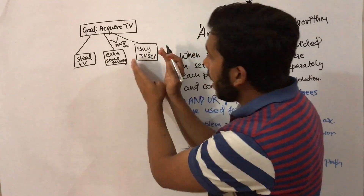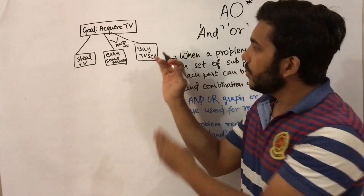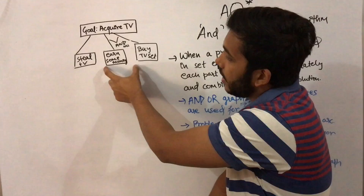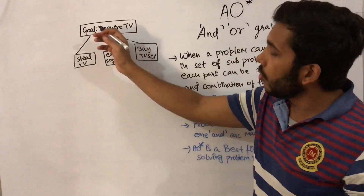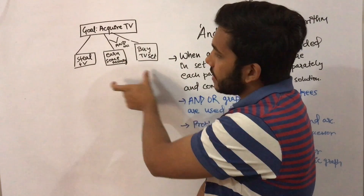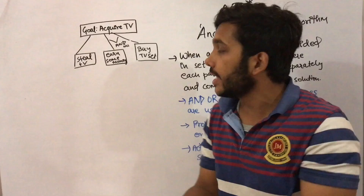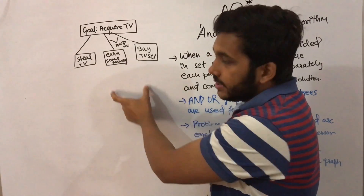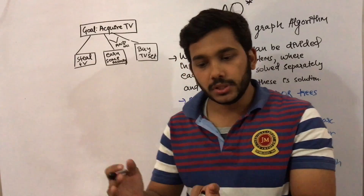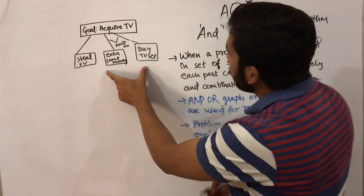So these are two different parts. Earning some money is divided into a smaller part, and buying a TV set is another part. If you have money stored, you can buy a TV set; if you don't, you have to earn that money. So acquiring a TV was your goal, and that goal can be achieved in different ways.